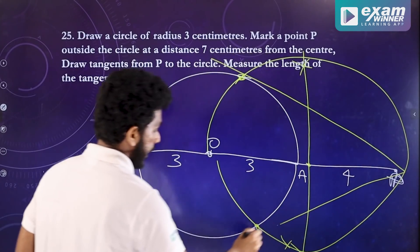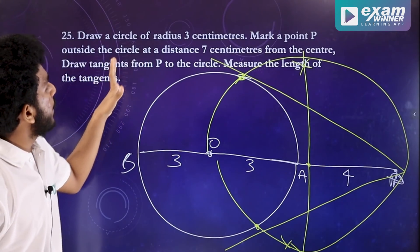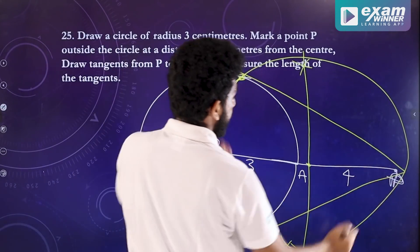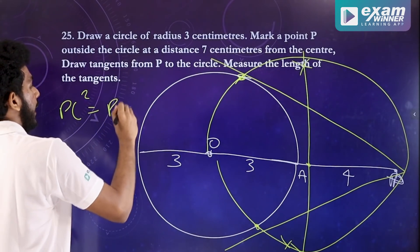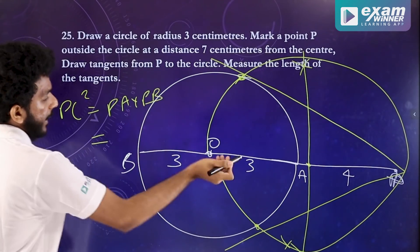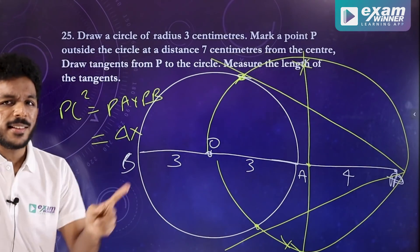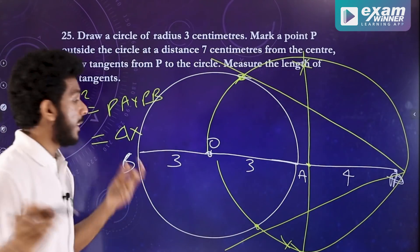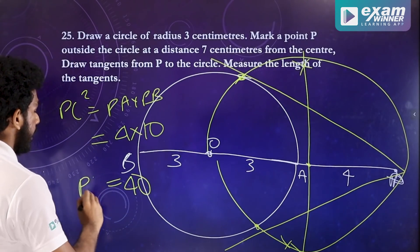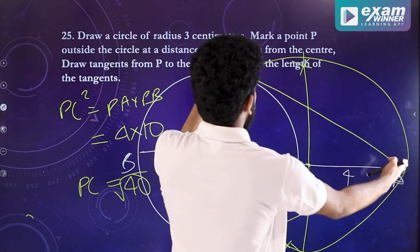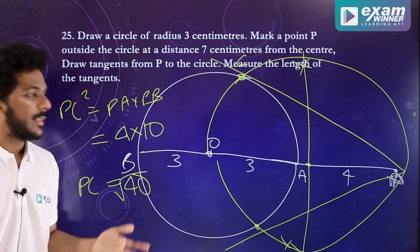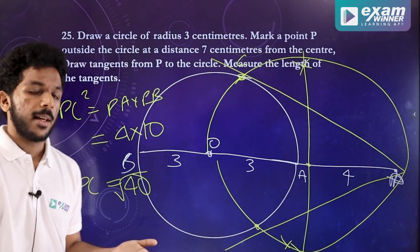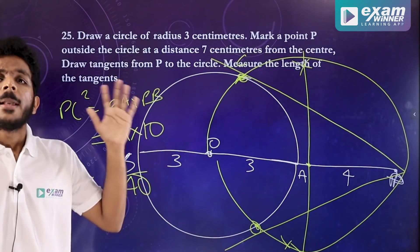Now we measure the length of the tangents. PC² equals PA into PB. PA into PB — we have 4 plus 3 plus 3 equals 10. Then 4 into 10 equals 40. Then measure root of 40. The tangent length is root 40. The basic circle of the construction has a 3.5 cm radius, and the first circle meets the point at the tangent.